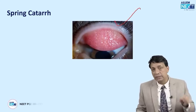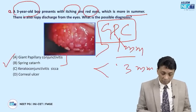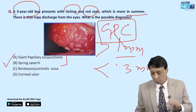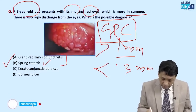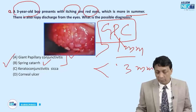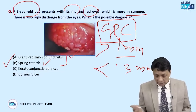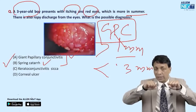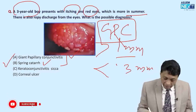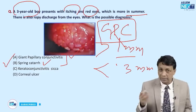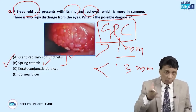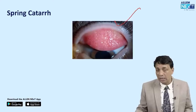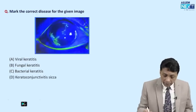Giant papillae look the same in both GPC and spring catarrh — the finding alone is not specific. GPC is seen in contact lens wearers, while spring catarrh is seen in young boys complaining of itching in hot weather. The history differentiates them: if there is a history of contact lens use, the diagnosis is GPC; if it is a young boy with seasonal itching, it is spring catarrh.